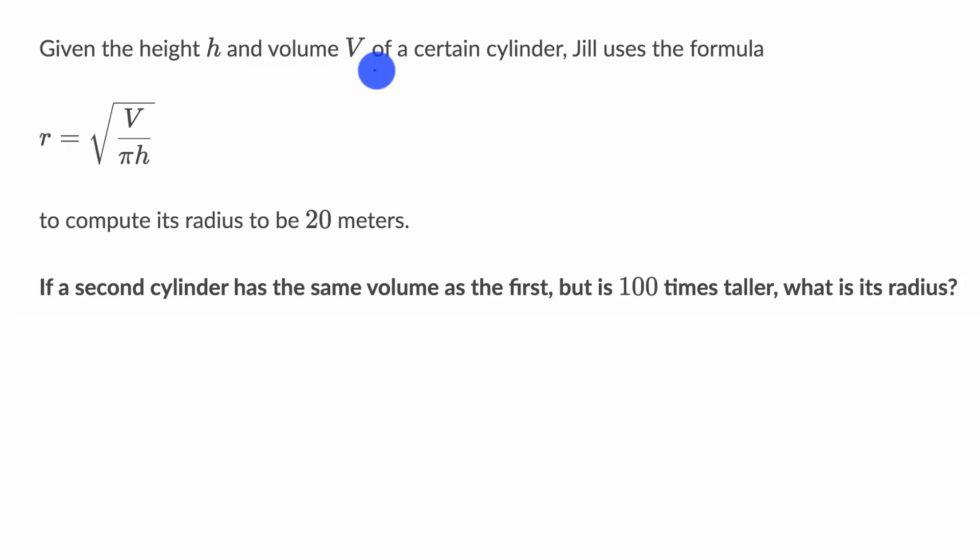We're told that given the height h and volume V of a certain cylinder, Jill uses the formula r equals the square root of V over pi h to compute its radius to be 20 meters. If a second cylinder has the same volume as the first but is 100 times taller, what is its radius?